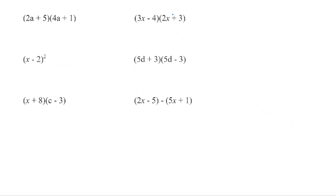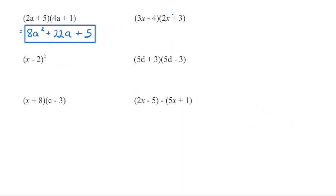Now we're going to try to speed this process up a little bit. So I'm going to go 2a times 4a is 8a squared. Then 2a times 1 is 2a, and 5 times 4a is 20a. Combining those in my head: 2a plus 20a is 22a, and then 5 times 1 is 5. We can eliminate the middle step and go straight to the simplified answer.